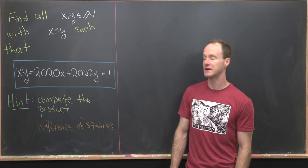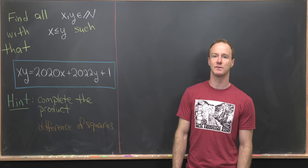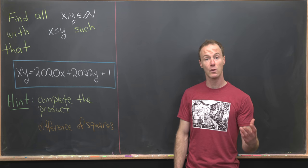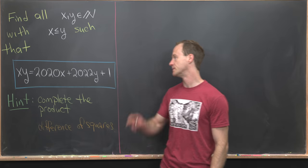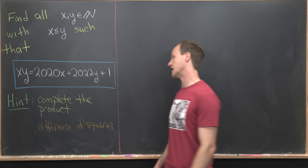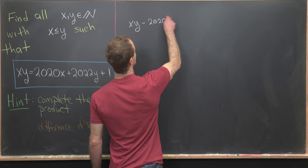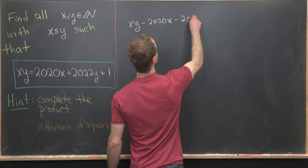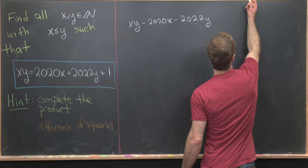Okay, so let's maybe jump into the solution. We're going to jump in with this first hint, which is to complete the product. And in order to do that, we want to move all our variables to one side of the equation. So we'll move this term and this term over to the left-hand side. That'll leave us with xy - 2020x - 2022y = 1.